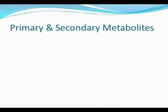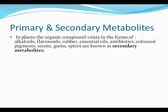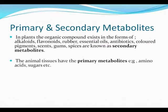Coming to the primary and secondary metabolites: in plants, the organic compounds exist in the form of alkaloids, flavonoids, rubber, essential oils, antibiotics, colored pigments, scents, gums, and spices. These are known as secondary metabolites. The animal tissues have primary metabolites in the form of amino acids or sugars.